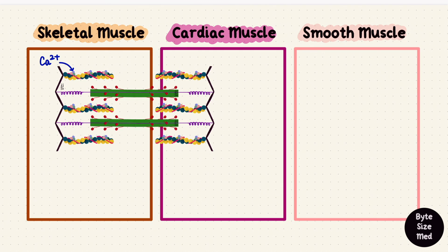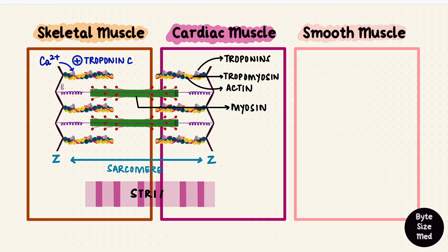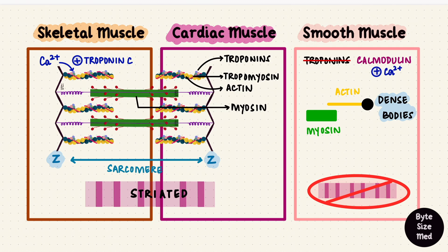That calcium binds to troponin C in both skeletal and cardiac muscle. Troponin C is part of the thin filaments, along with troponin I, T, tropomyosin, and actin. The thick filaments have myosin, and these alternate regularly. The thin filaments attach to a Z disc, and the structure between two Z discs is a sarcomere. This regular arrangement gives rise to cross-striations. Smooth muscles don't have this regular arrangement, so they are not striated and don't have sarcomeres. They have actin and myosin, but the actin filaments attach to dense bodies instead of Z discs. They also don't have troponin; instead they have calmodulin, which binds to calcium. Smooth muscles use myosin light chain kinase and myosin light chain phosphatase for contraction and relaxation, which skeletal and cardiac muscles don't use. Ultimately, calcium results in the sliding of thin filaments over thick filaments in all three types of muscle, resulting in shortening of the muscle — that's a contraction.